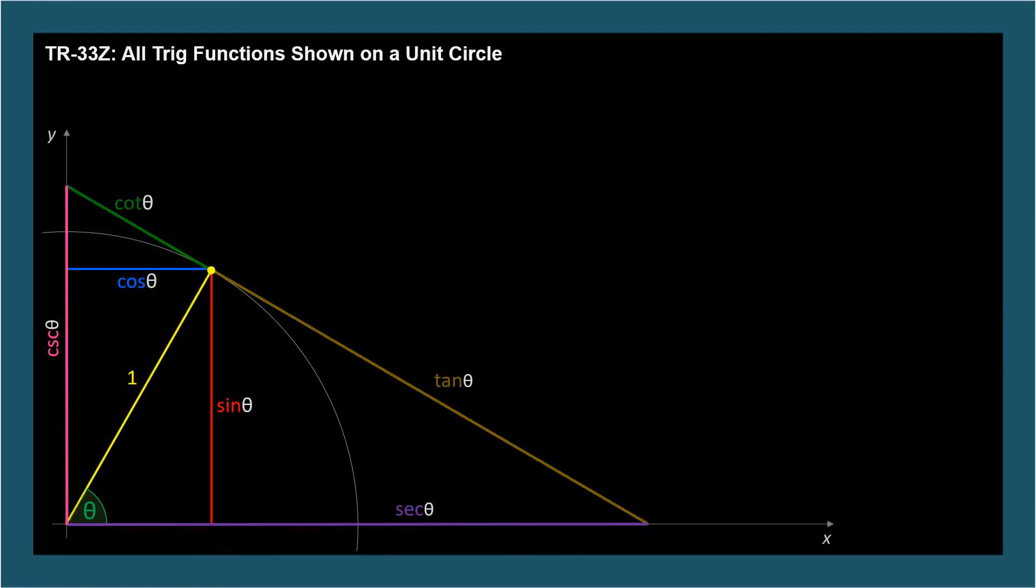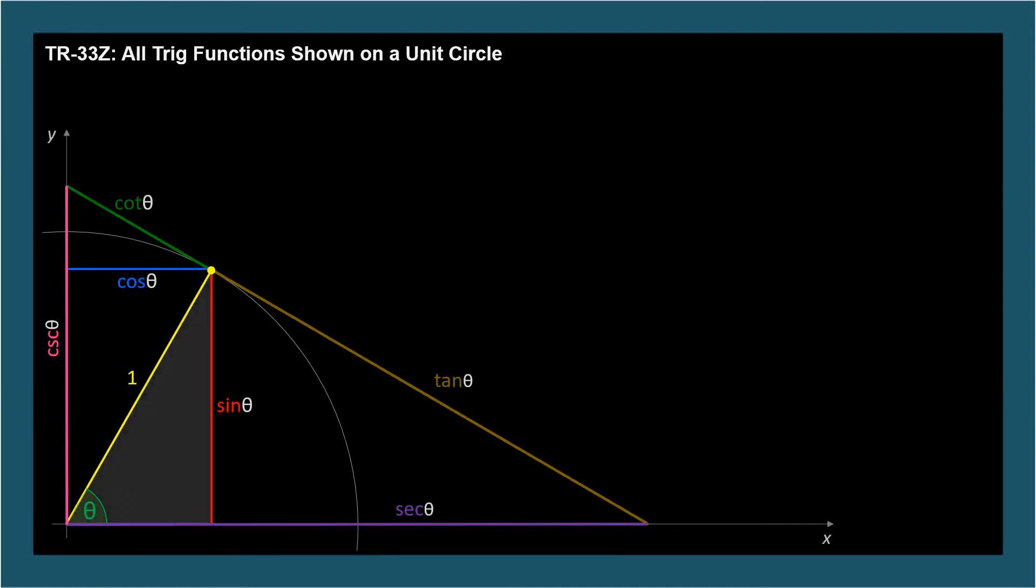I want to point out something else that's pretty interesting. We've already seen that we have a unit circle triangle corresponding to the first Pythagorean identity, the most important equation in trigonometry. Cosine squared theta plus sine squared theta equals 1.